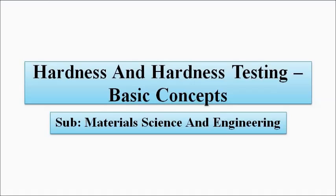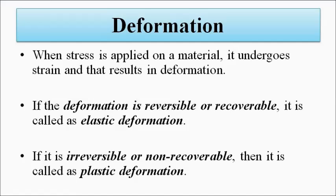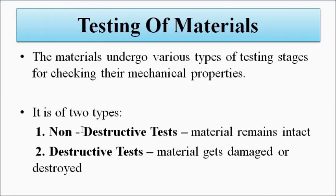Hardness testing covers the various types of tests performed to measure the hardness of a material. All of this testing is done taking into account one important aspect of engineering materials: deformation, which occurs as a result of applied stress. Deformation results in a change in the length and cross-sectional area of the material. It is of two types — reversible (elastic deformation) and irreversible (plastic deformation).